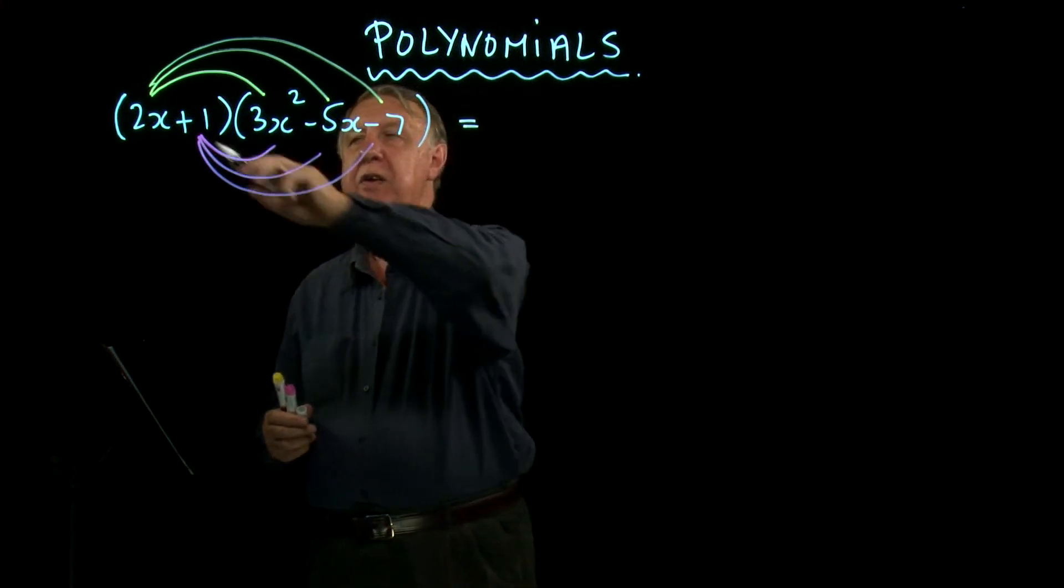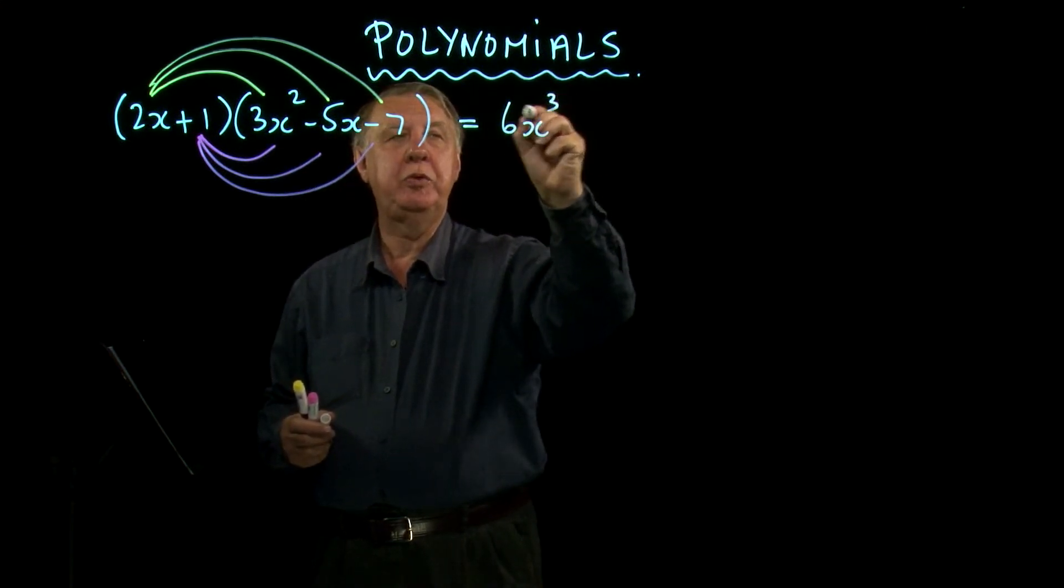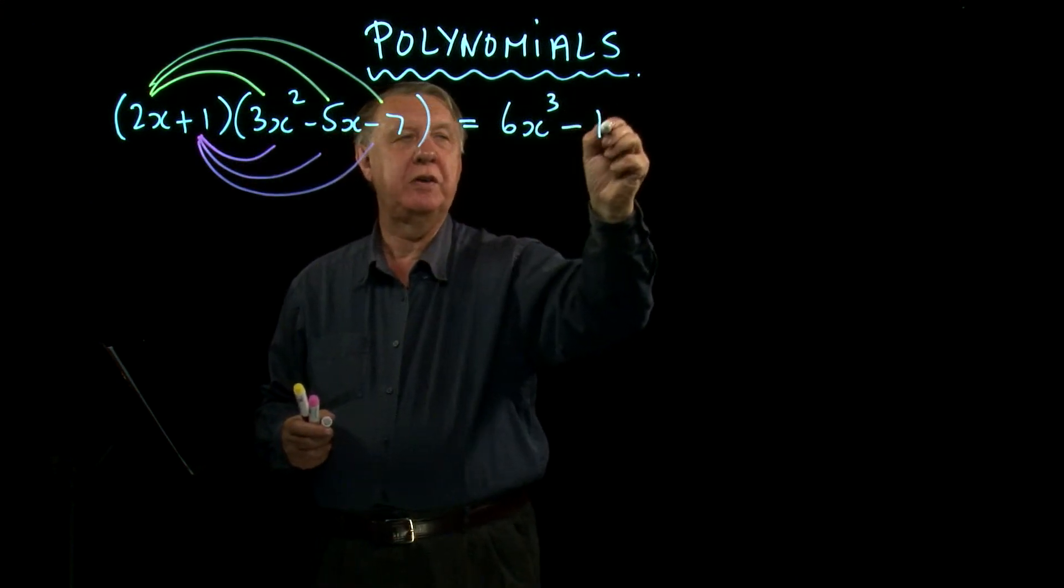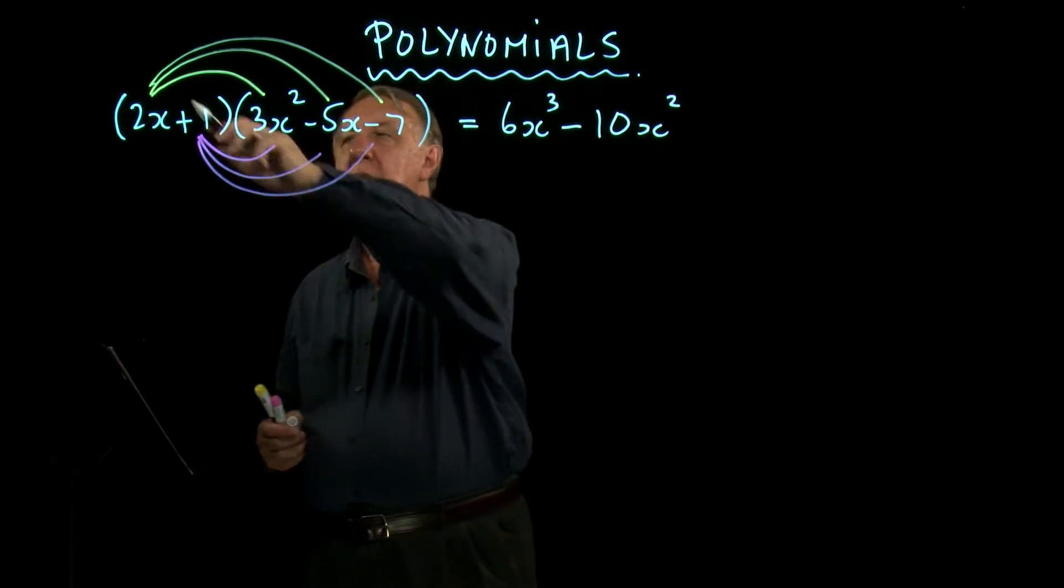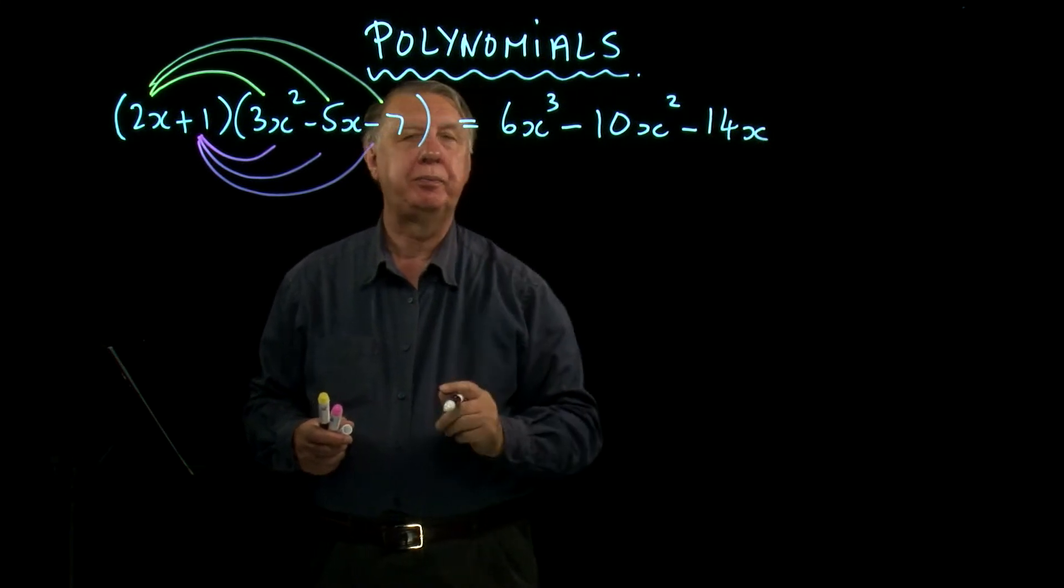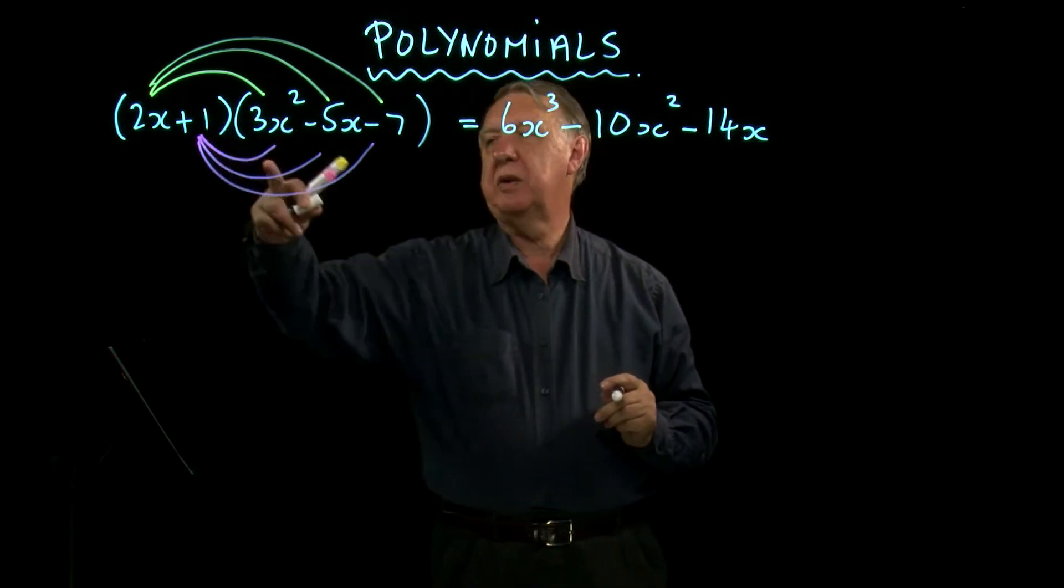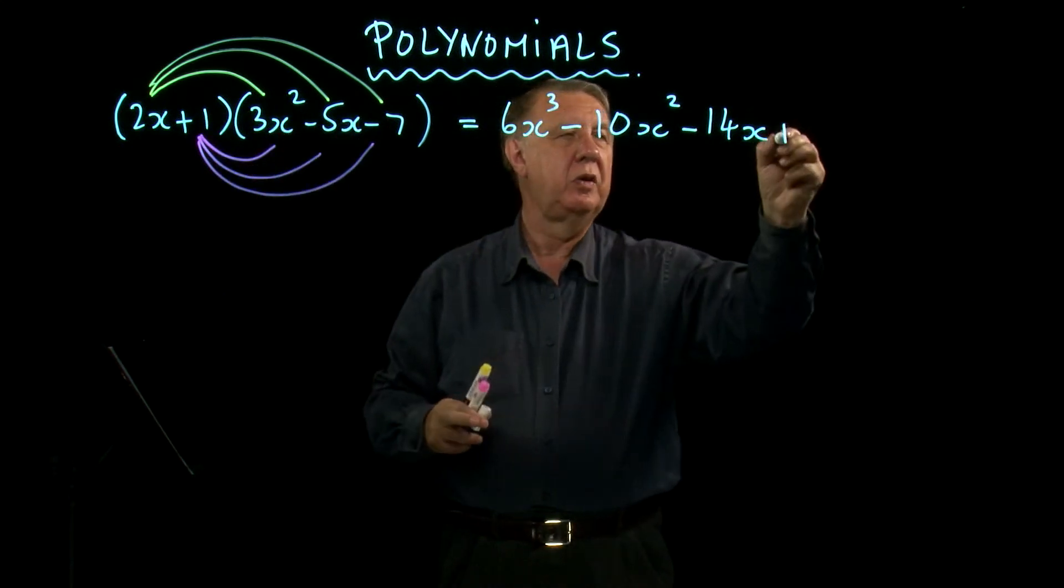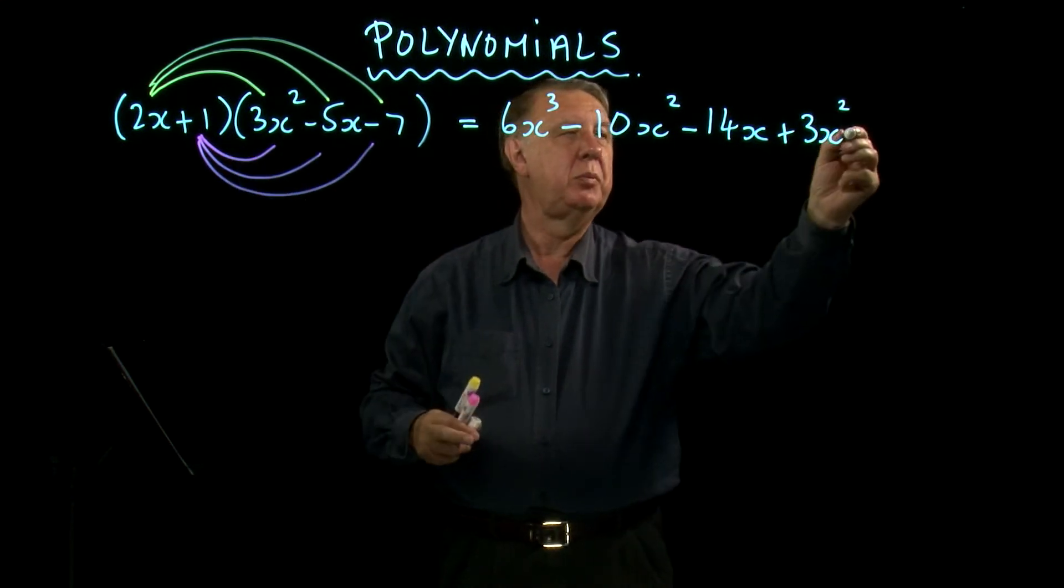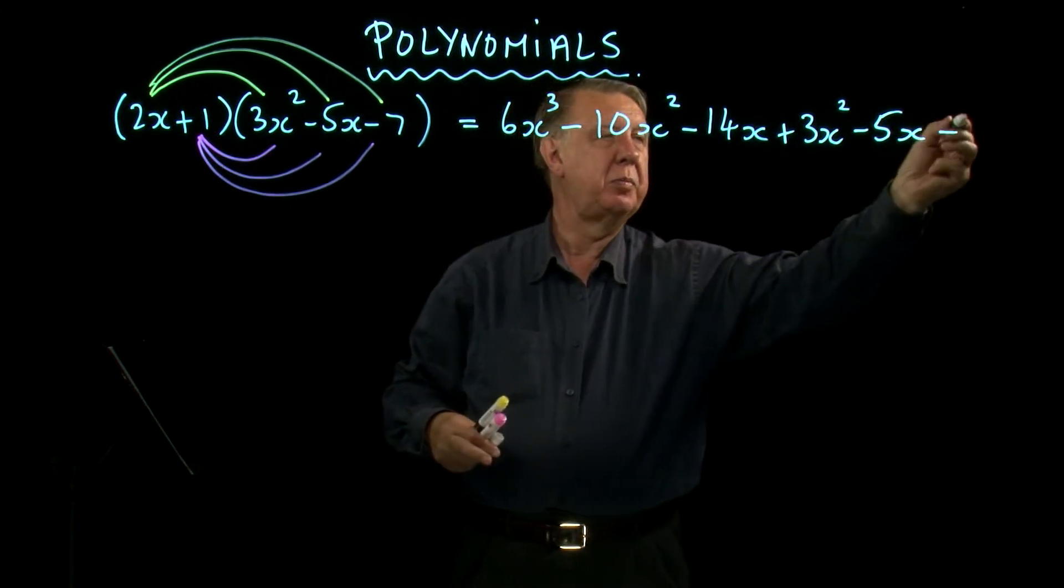So in this case, 2x times 3x² is 6x³. 2x times -5x is -10x². 2x times -7 is -14x. Then looking at the pink terms, +1 times everything is nice and easy: +1 times 3x², +1 times -5x, +1 times -7.